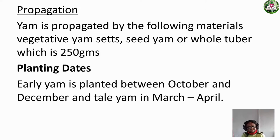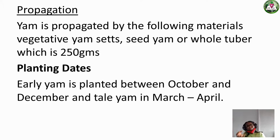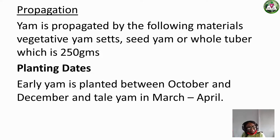After cutting the yam, you place the cut side facing up and dry it in the sun so that the moisture that comes out of the cut surface will dry. This helps prevent rodents from eating it. Some farmers also rub chemicals on the cut surface so that when small animals perceive the odor, they will run away and not eat the planted yam.